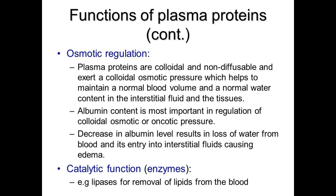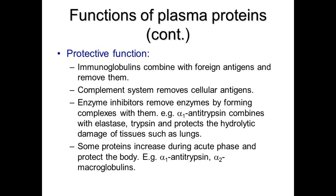Catalytic functions: for example, lipases aid in the removal of lipids from the blood. Immunoglobulins combine with foreign antigens and remove them. The complement system removes cellular antigens. Enzyme inhibitors remove enzymes by forming complexes — for example, alpha-1 antitrypsin combines with elastase and trypsin to protect tissues such as the lungs from hydrolytic damage.